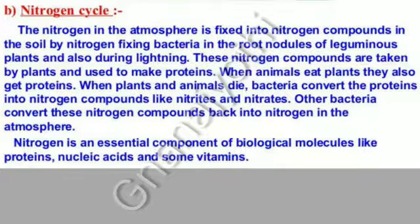The nitrogen in the atmosphere is fixed into nitrogen compounds in the soil by nitrogen-fixing bacteria in the root nodules of leguminous plants, and also during lightning. These nitrogen compounds are taken up by plants and used to make proteins. When animals eat plants, they also get proteins. When plants and animals die, bacteria convert the proteins into nitrogen compounds like nitrites and nitrates. Other bacteria then convert these nitrogen compounds back into nitrogen in the atmosphere. Nitrogen is an essential component of biological molecules like proteins, nucleic acids, and some vitamins.